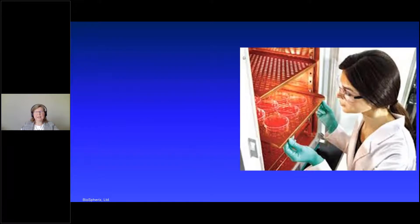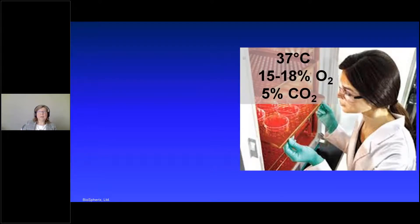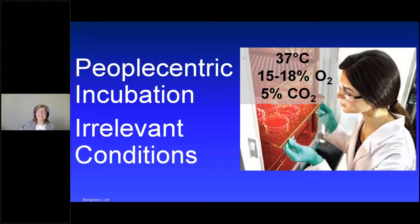A lot of people start with this image — a traditional cell culture incubator — and I'm going to make the case that it is designed for the needs of people, not the needs of the cells. It's easy to get your hands in there and your face right in there. But there's that water pan in the bottom that's always contaminated and poses a contamination risk. The oxygen in here is all wrong — way too high for the levels that cells, even normal cells, experience inside our bodies. The CO2 is there only as long as the door is shut. Every time you open the door, the CO2 goes off and the pH goes off — whether it's you or someone else in the lab accessing their cells.